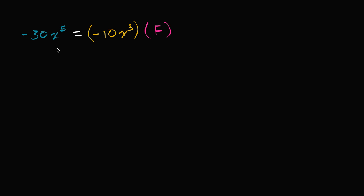We have negative 30x to the fifth is equal to negative 10x to the third times f. I encourage you to pause this video and see if you can figure out what f is going to be.